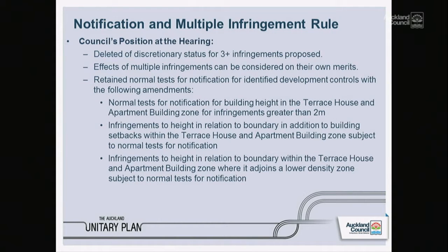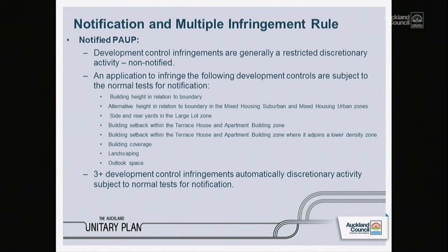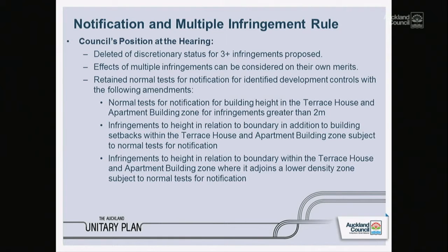If there are multiple infringements, each can be assessed on its merits — though it's still a red flag for anyone reviewing an application with four or five infringements. The council's position was that the normal test for notification would apply across a wide range of infringements, including those previously discussed. Additionally, infringements of more than two metres in the terraced housing and apartment building zone, and infringements of height to boundary in that zone, would also be subject to the normal test for notification. References to the council's evidence for topics 59 to 63 are available in the planning evidence and in the urban design evidence of Graham McIndoe, including modelling, sketches, and examples of what these controls seek to achieve.